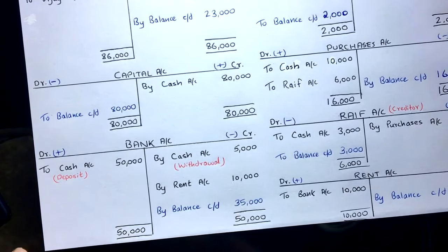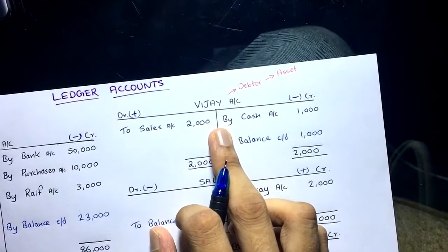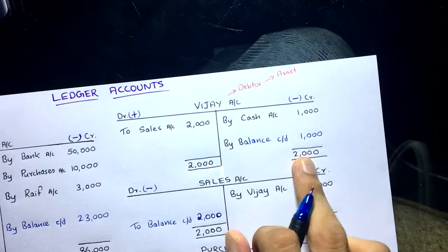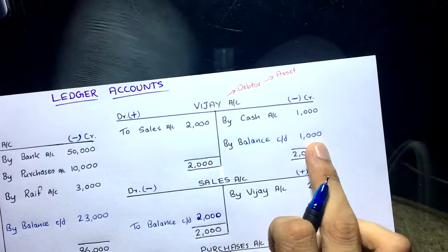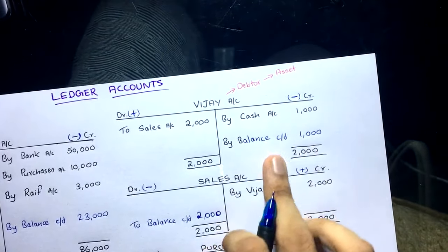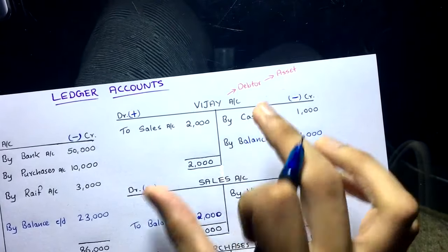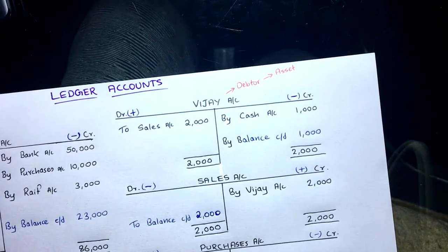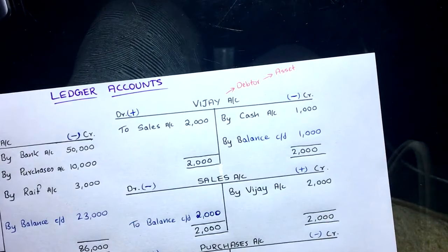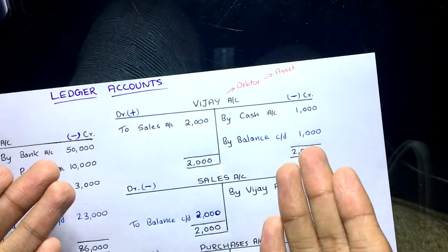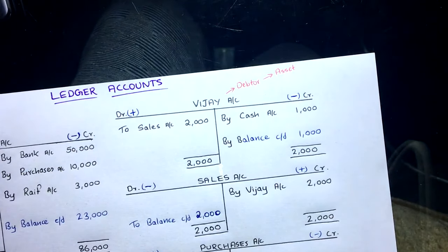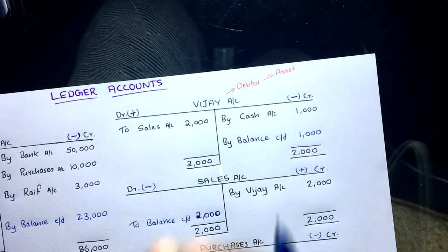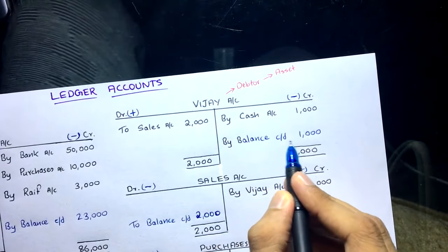For the VJ Account: debit side has sales of 2,000, credit side has cash of 1,000. Debit side is bigger, so write 2,000 on both sides. Balance: 2,000 − 1,000 = 1,000, carried down. The interpretation: we have to receive 1,000 from VJ. In a real company with many transactions with one customer, all are summarized in one T-account, so at any point you know how much is receivable from that customer.